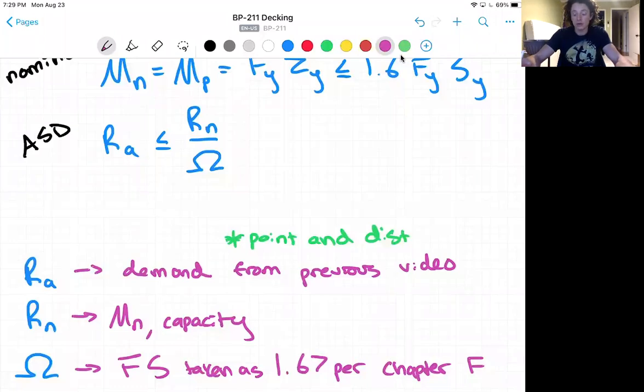We want to check our point and distributed loads. Rn is our moment capacity, our nominal capacity. And omega is our factor of safety taken as 1.67 per the chapter F general requirements.